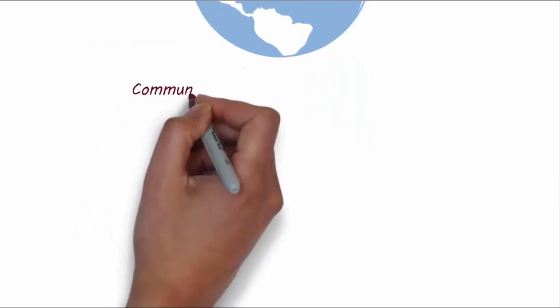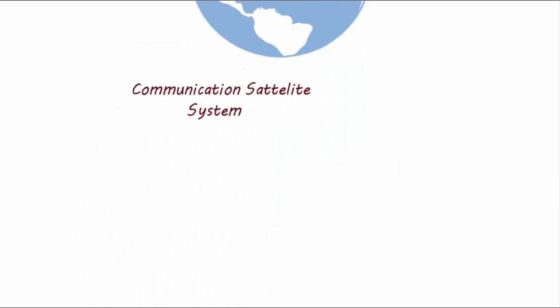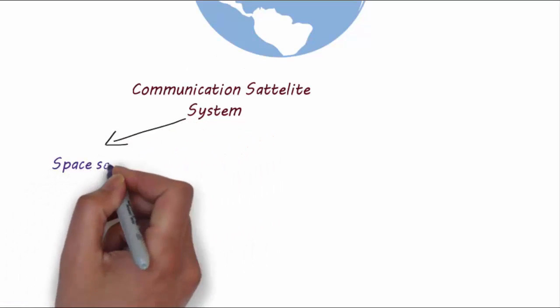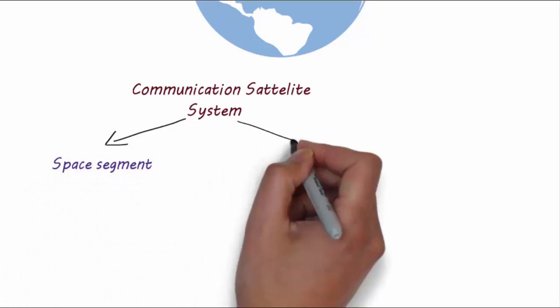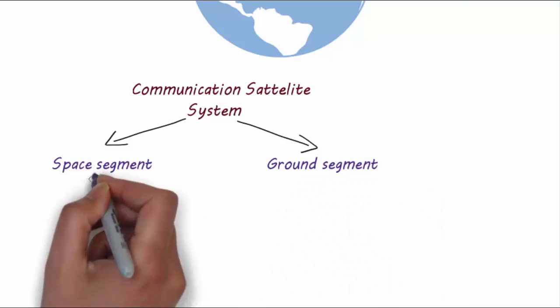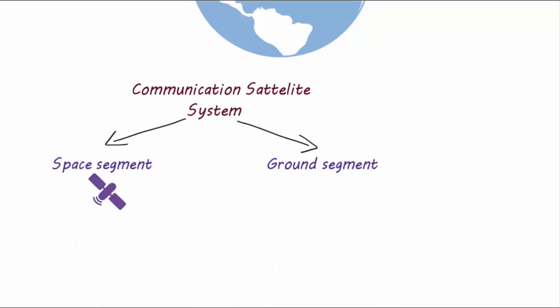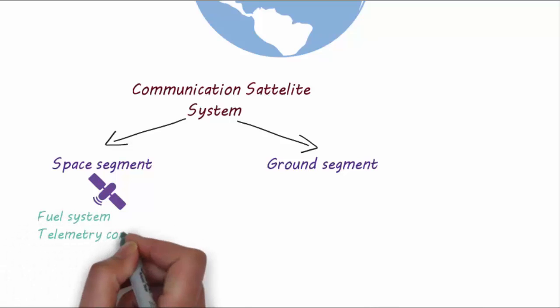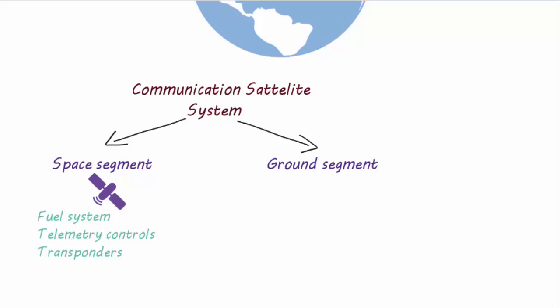Communication satellite system is divided in two parts. The first one is a space segment and the second one is ground segment. Satellite itself comes under a space segment and it consists of three units: fuel system, telemetry control system, and transponder. Transponder consists of receiving antenna and a frequency converter that is used to send back the signal in downlink.